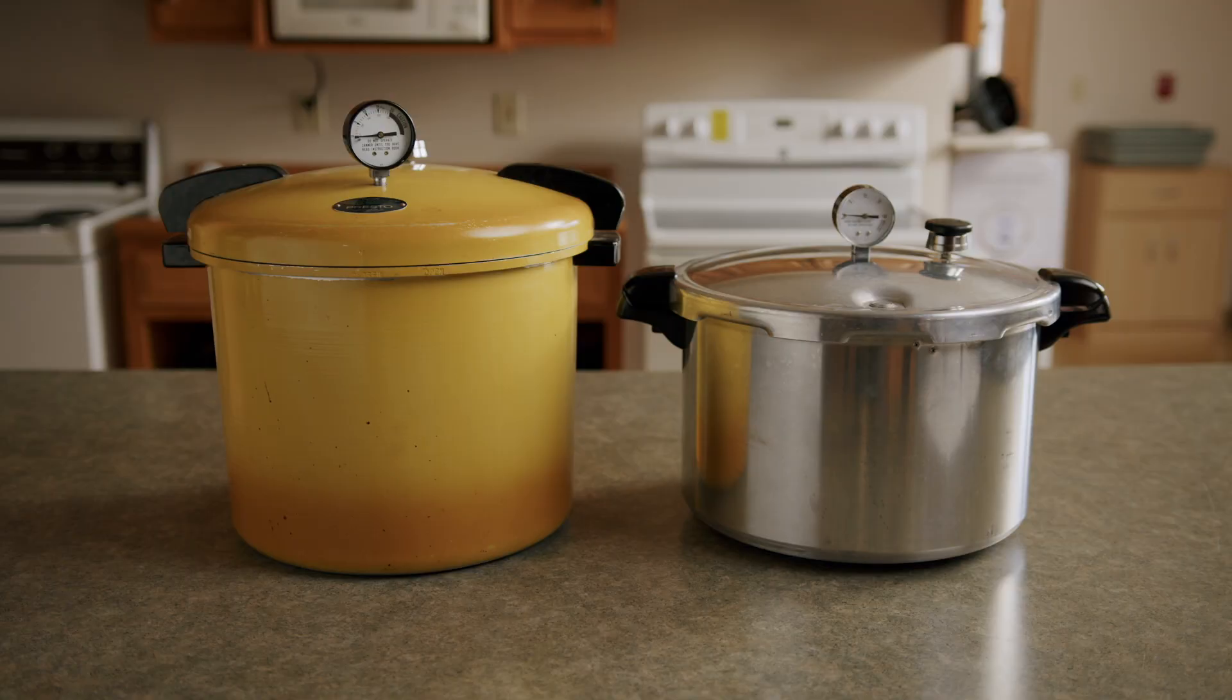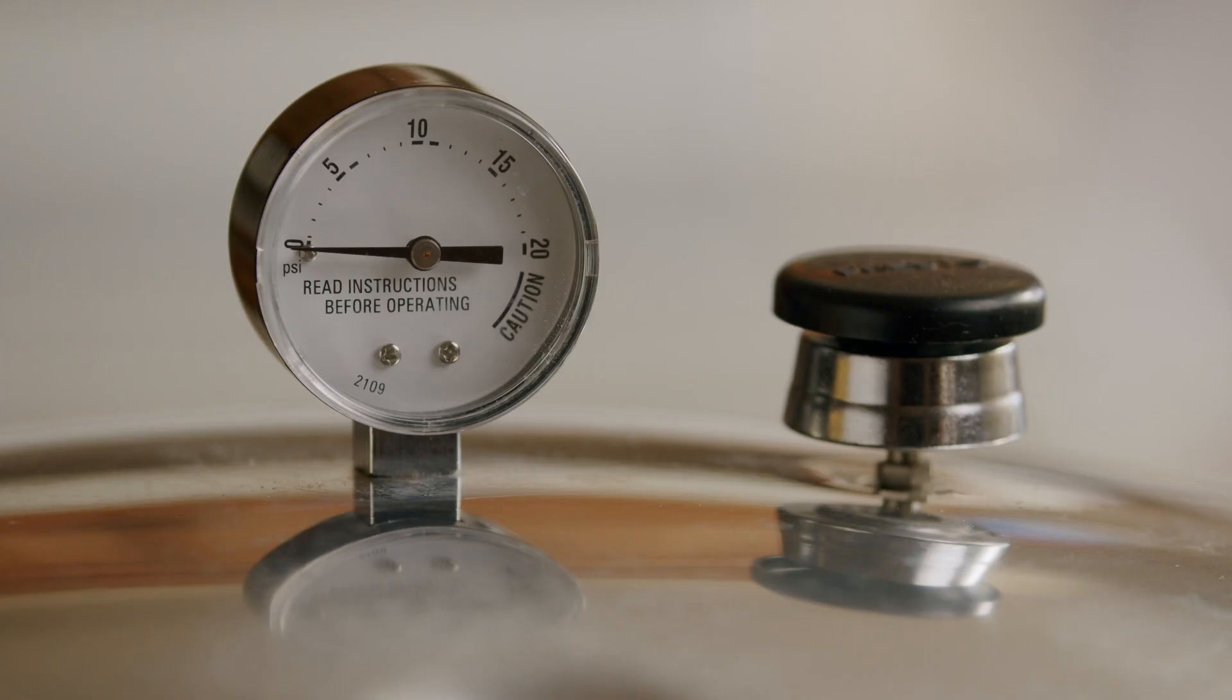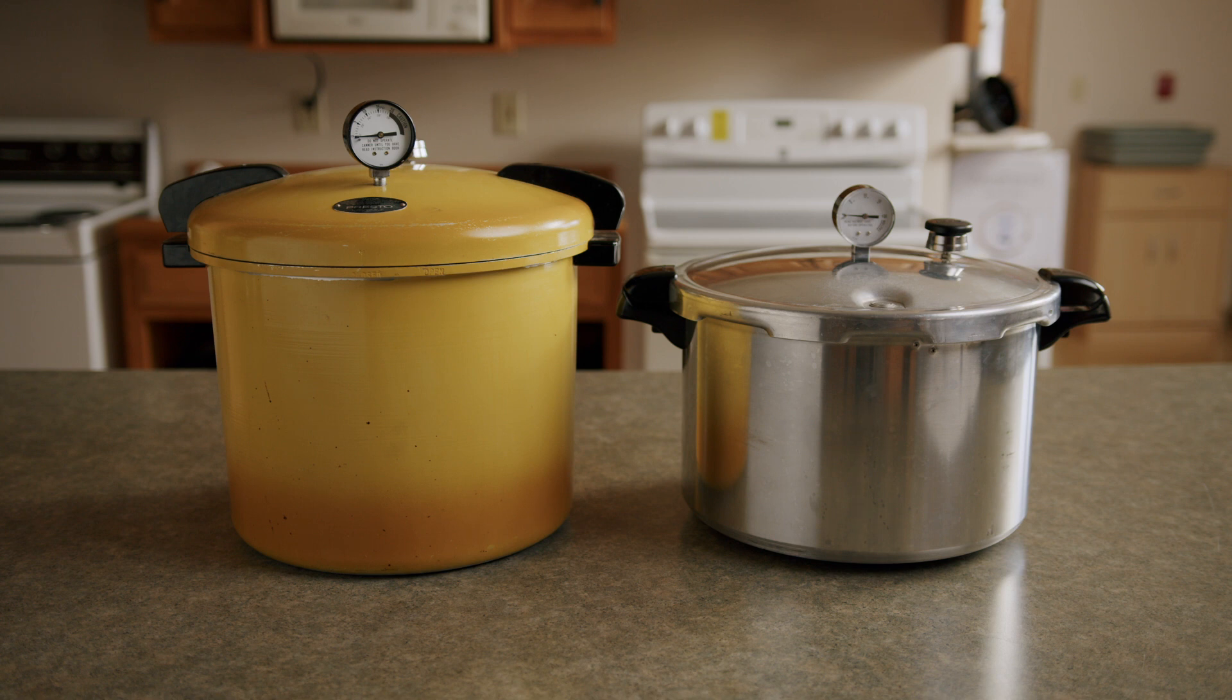Dial gauge canners have a dial on the top of the lid with numbers for monitoring the pressure as it builds and during processing. Dial gauges should be checked for accuracy every year.